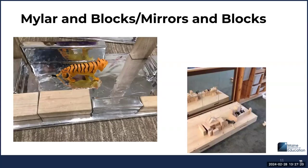In the mylar and block center, connections will be made to Raccoon on His Own. Children will explore reflections on mylar and with mylar-covered blocks, compare and contrast reflections to the story, experiment with moving light sources, and compare and contrast reflections from different structures. Similarly, in the mirrors and blocks center, connections can be made to Raccoon on His Own and Play With Me — comparing reflections to the story, experimenting with moving light sources, creating settings from the two stories, and recording structures and reflections in writing and drawing.